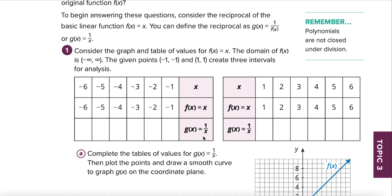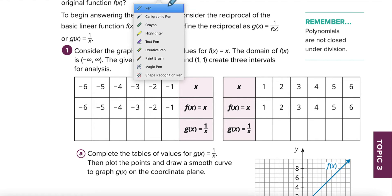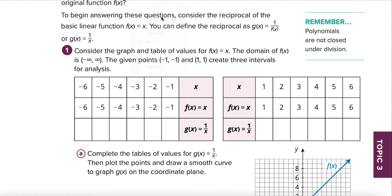A rational function is when we have a fraction. Specifically, rational functions need a variable in the denominator — in the x. So let's see what happens when we have that situation going on. We're going to fill this table out.